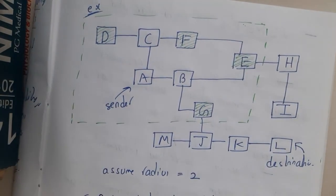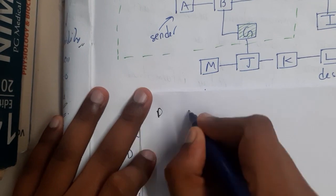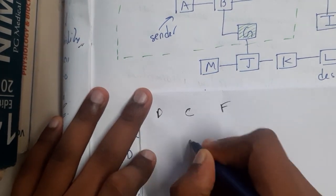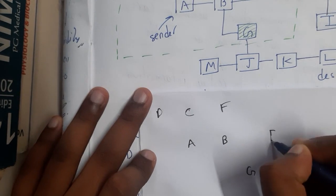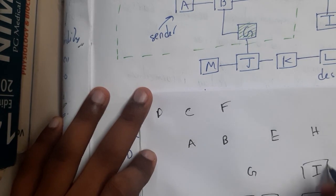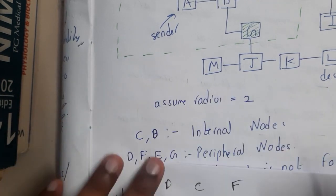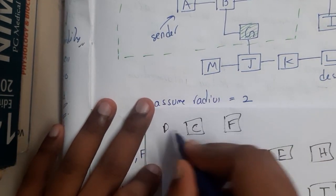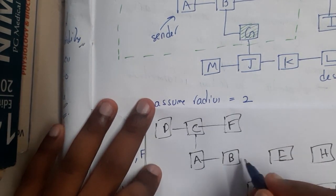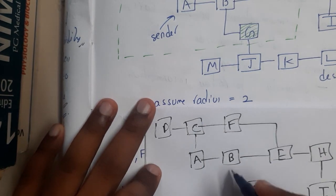I'll be drawing the diagram again and explaining it. Please concentrate for around two to three minutes — the video will be done. The nodes are: F, A, B, G, E, H, I, M, J, K, L. Understanding these kinds of things from images without prior knowledge is really tough, so I'm drawing it to show exactly how it works.